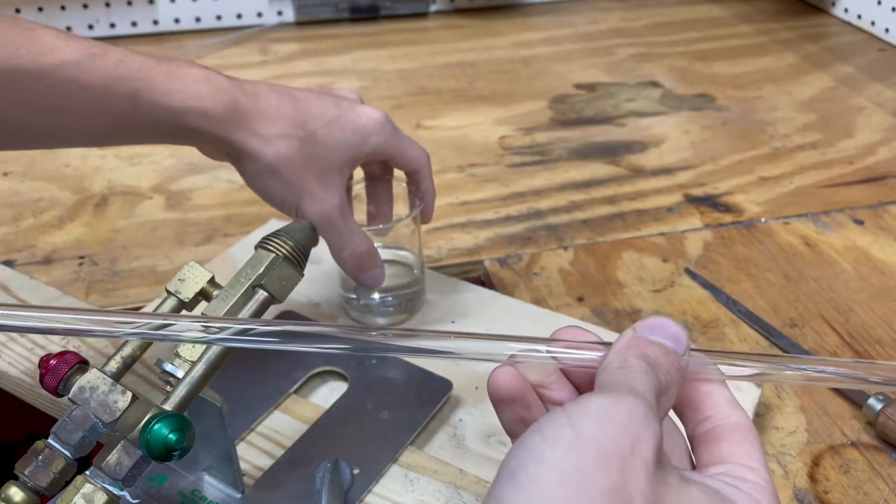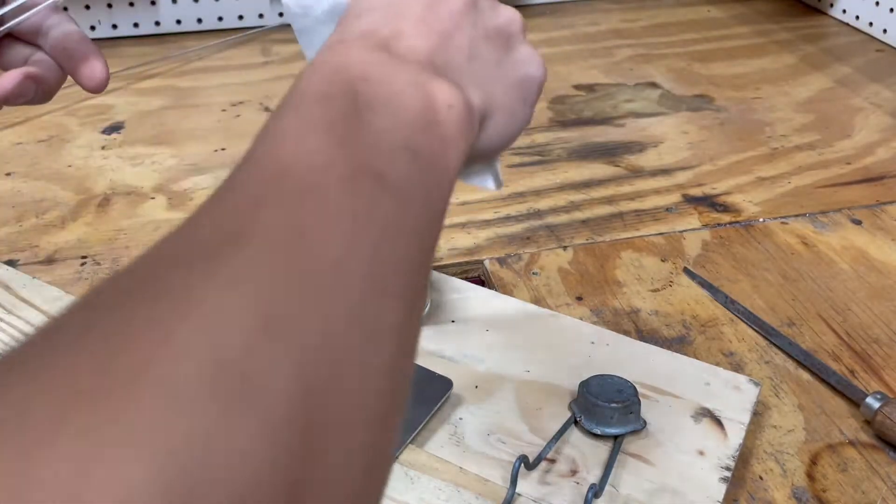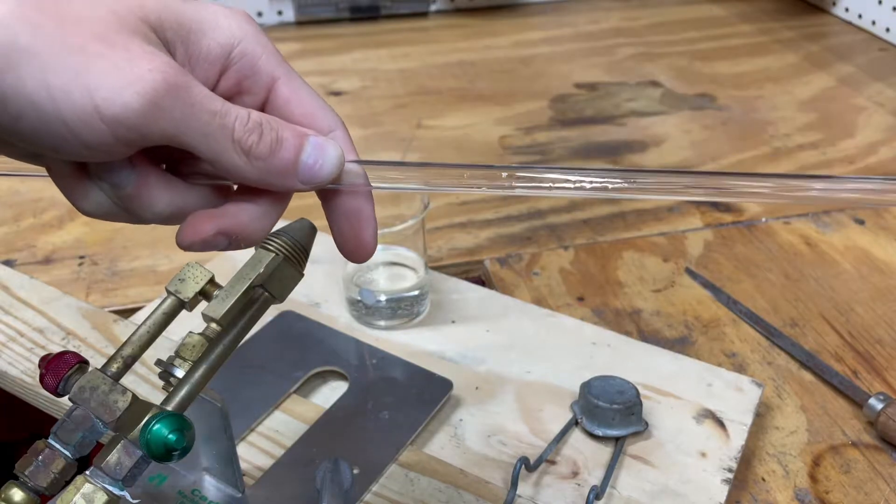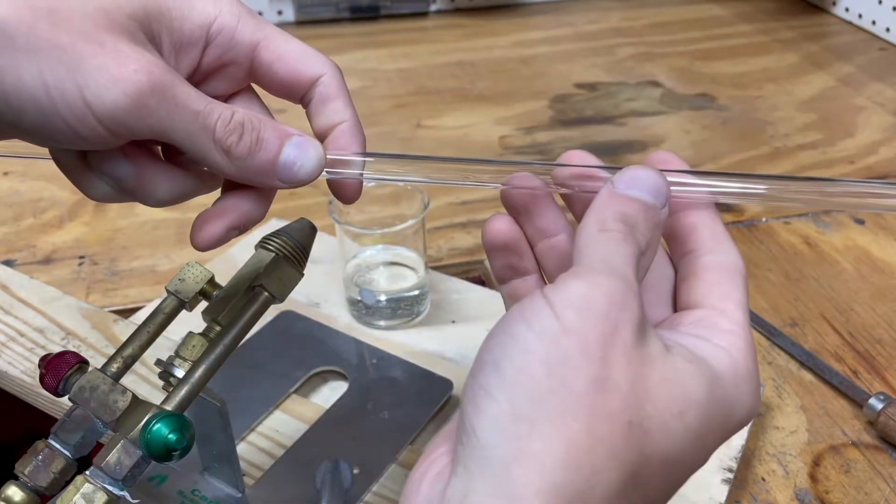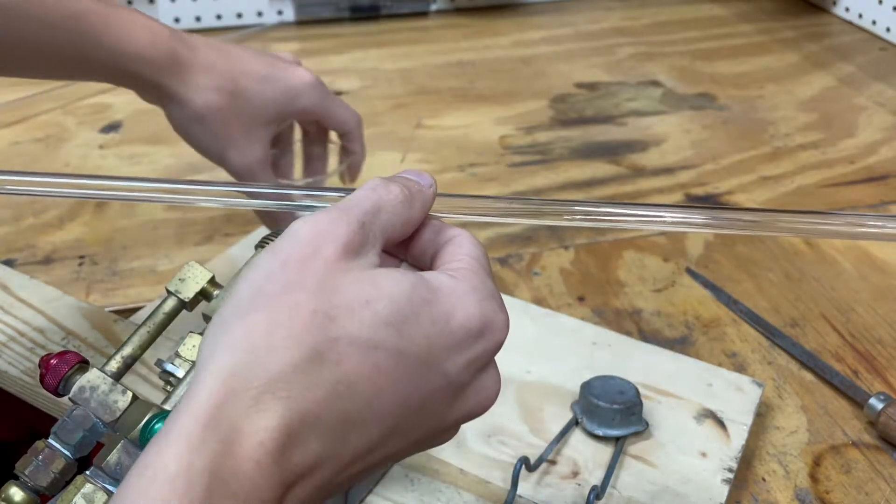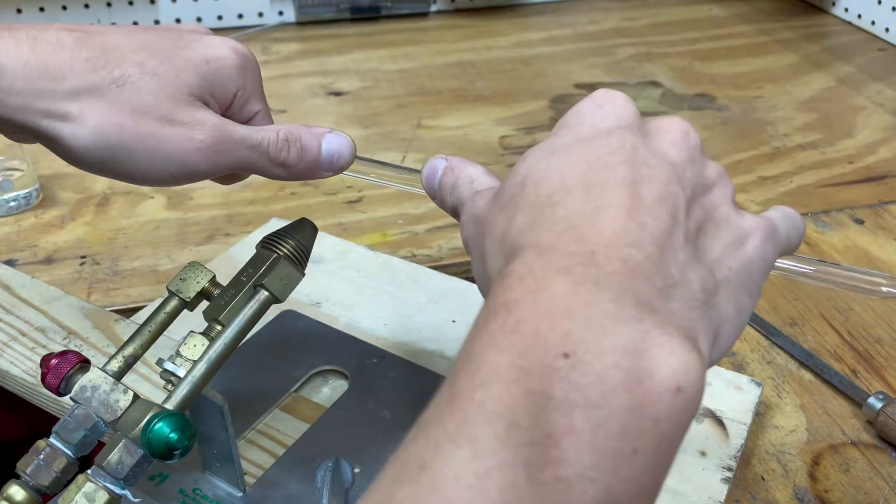Then you're going to want to wet this line by using a paper towel, spit or saliva, and wet the point. For the next part you're going to rotate the glass to where the score is on the other side of you, and then place your thumbs here and pull back and it'll snap.